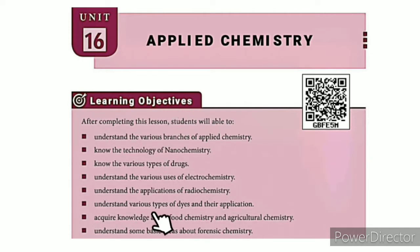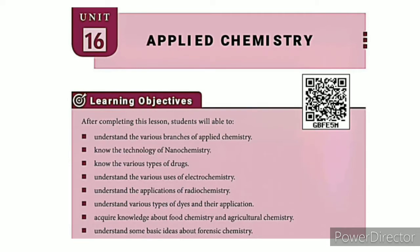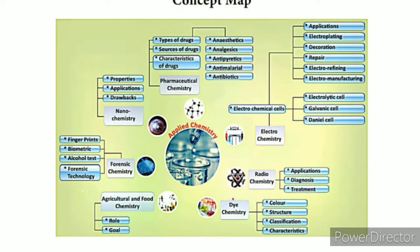Acquire knowledge about food chemistry and agricultural chemistry, and understand some basic ideas about forensic chemistry. In the lesson level, refer to the QR code link, ICT corner link in the description box, the unit guide, and the concept map.